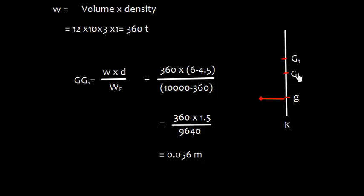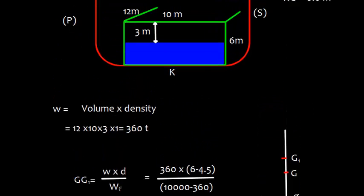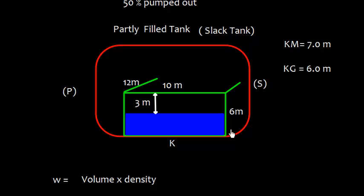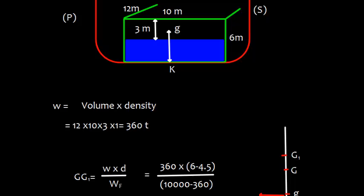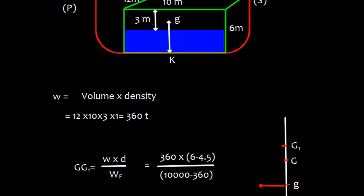Now, KG was here which is 6 meter and we discharge some weight down below K small g. Let us find out how much is the K small g. The geometrical center of this discharge portion will be at the midpoint of this and the distance from keel is going to be K small g. This is 3 meter plus this one is 1.5. So, K small g is 1.5 plus 3 that is 4.5.